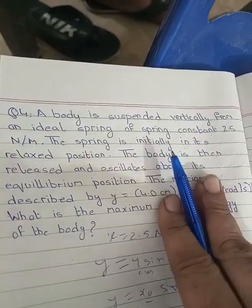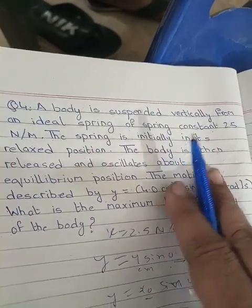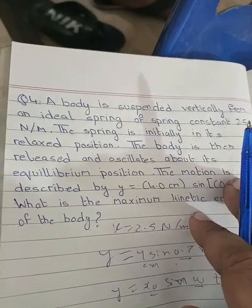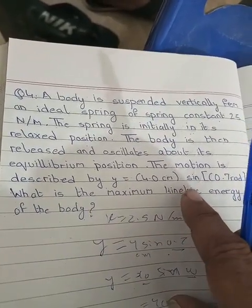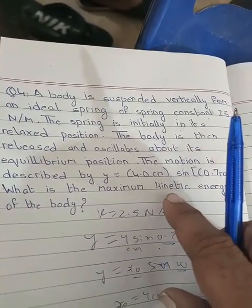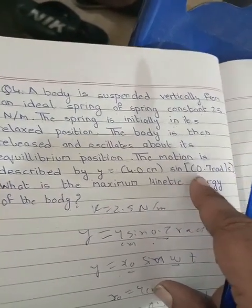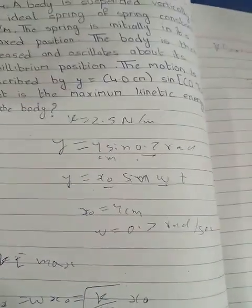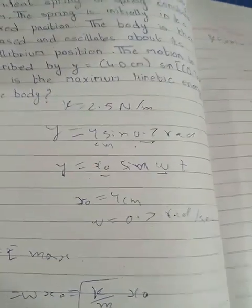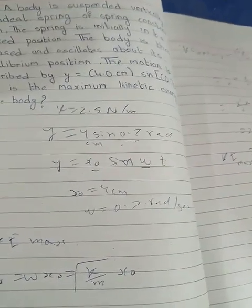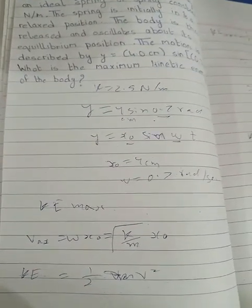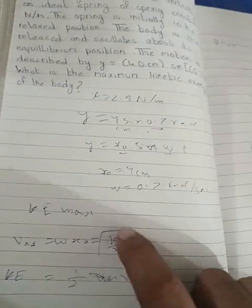A body is suspended vertically from an ideal spring of spring constant 2.5 Newton per meter. The spring is initially in its relaxed position. The body is then released and oscillates about its equilibrium position. The motion is described by Y equals 4 cm sine 0.7 radian per second T. What is the maximum kinetic energy? Given k equals 2.5, x-naught equals 4 cm, omega equals 0.7 radian per second.